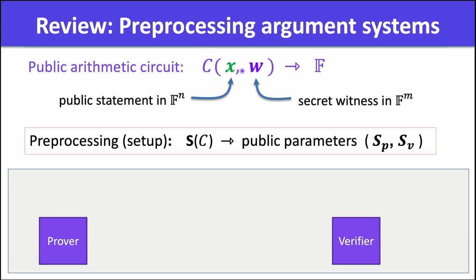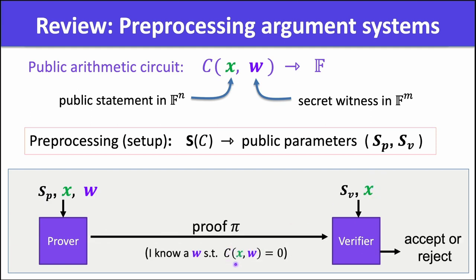We're going to be using an arithmetic circuit that takes as input a statement x, a witness w, and outputs an element in a finite field Fp. The first thing a pre-processing argument does is pre-process the circuit and output parameters for the prover and the verifier. Then later on, when the prover receives a statement and a witness, the prover can produce a proof that it knows a witness w such that C(x,w) is equal to zero, and the verifier will either accept or reject that proof.